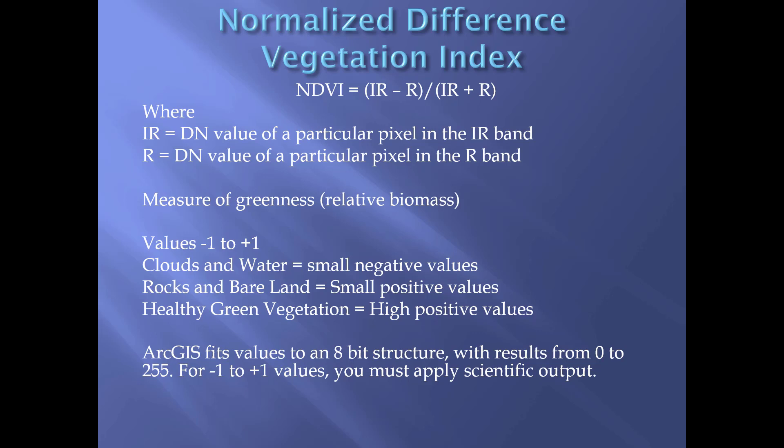Here's that equation again: it's infrared minus red, divided by infrared plus red. IR is the digital number of a particular pixel in the infrared band, and R represents the digital number from the red band.